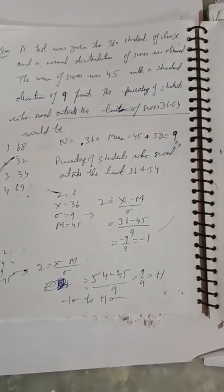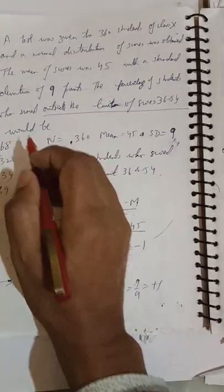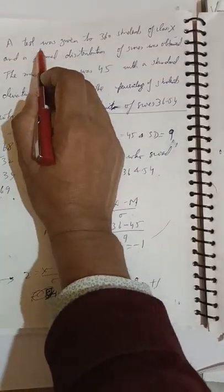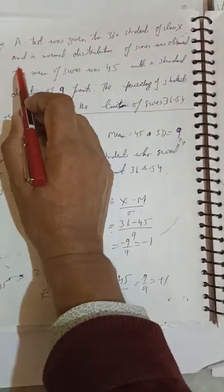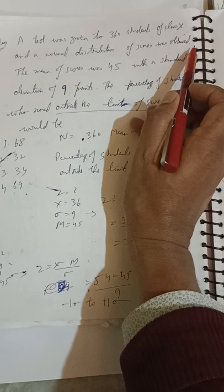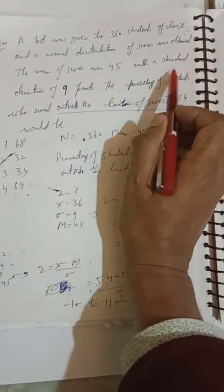Hello friends, today we will discuss some questions of research. Question: A test was given to 360 students of class 10 and a normal distribution of scores was obtained. The mean of scores was 45 with a standard deviation of 9 points.